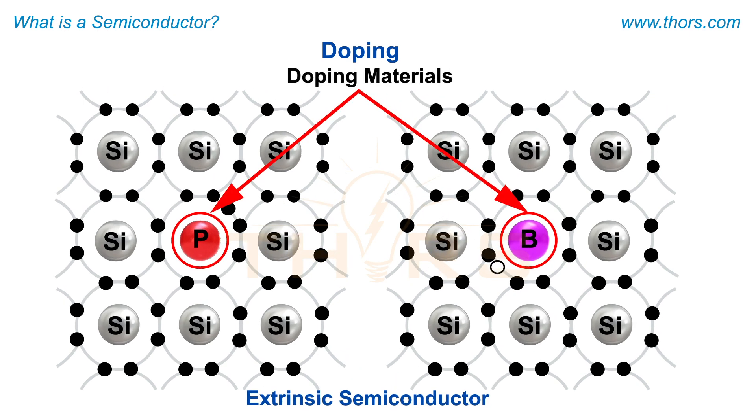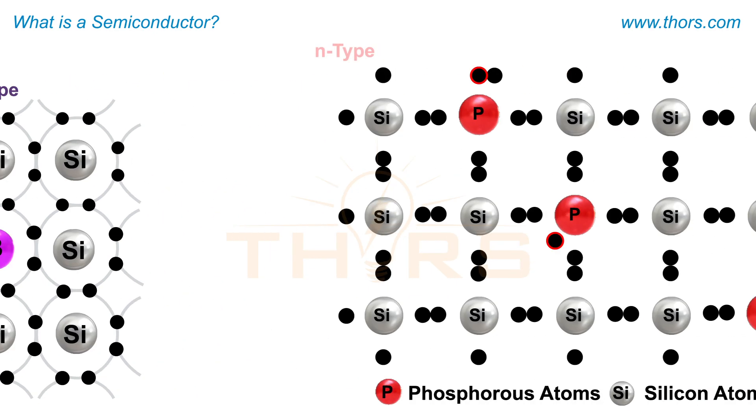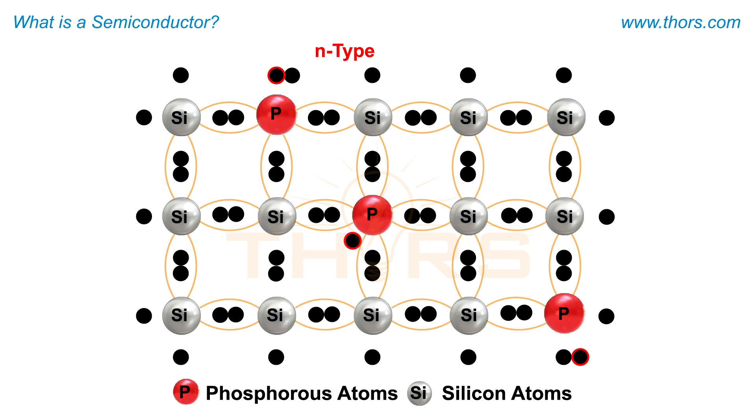Doping makes extrinsic semiconductors conductive at room temperature. Extrinsic semiconductors, depending on the doping material, can be classified into n-type semiconductors and p-type semiconductors.